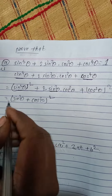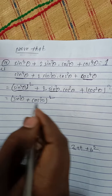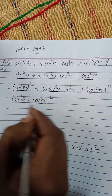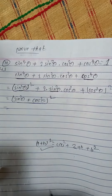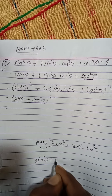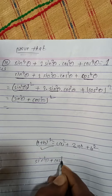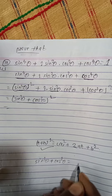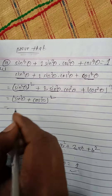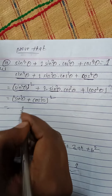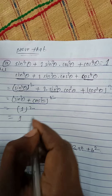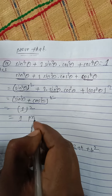Using this formula, we can write it as (sin²θ + cos²θ)². We know that sin²θ + cos²θ = 1, so we substitute 1 in this place: 1² = 1. Proved.